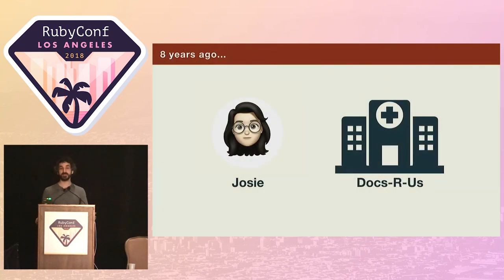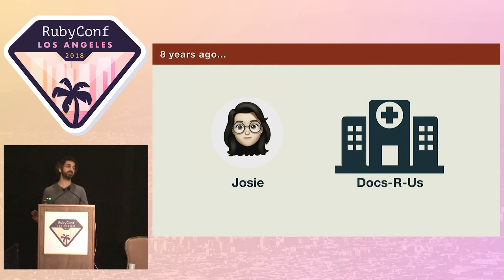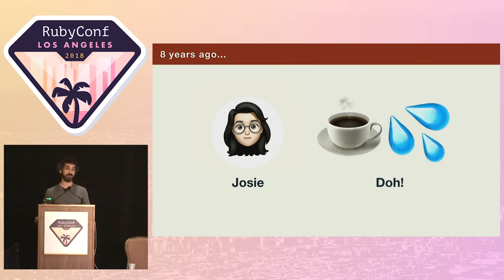Meet Josie. Josie is an engineer at DoxaRus, a startup that's building appointment booking software for medical professionals. Josie was pretty much one of the first hires by the company after they secured funding, and loves the fast pace of startup life. Today, however, she's having a bad day.